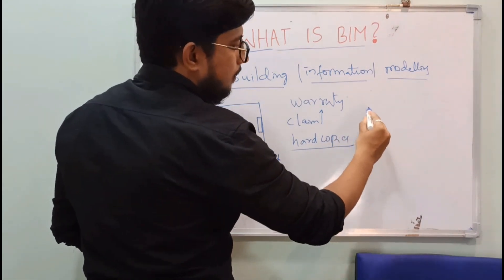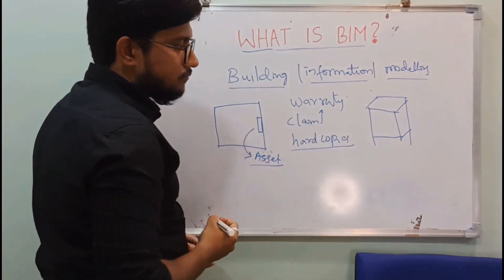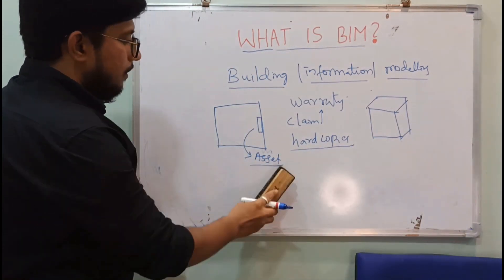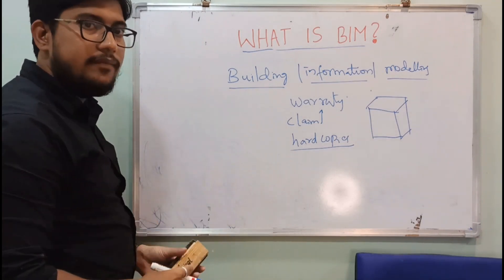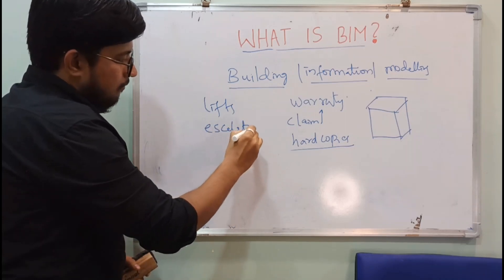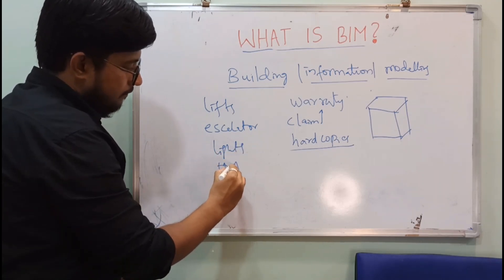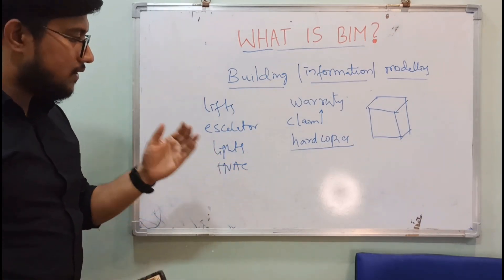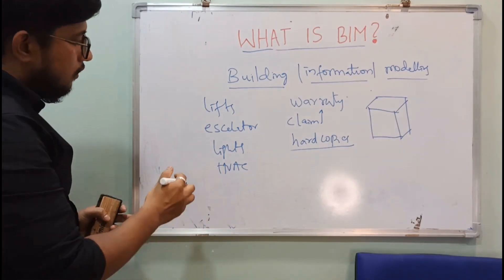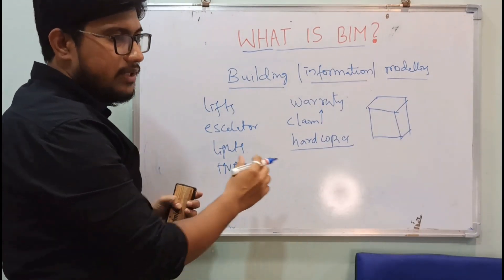Now consider a big project — a mall. In a mall project, we have a lot of items. For example, there are lifts and escalators. We also have a lot of lights, and HVAC elements such as AHUs and chillers. There are many elements in a mall, and a mall is a complex project.